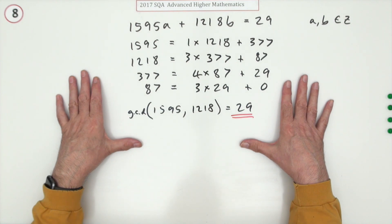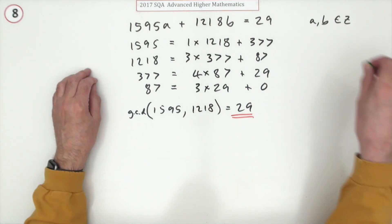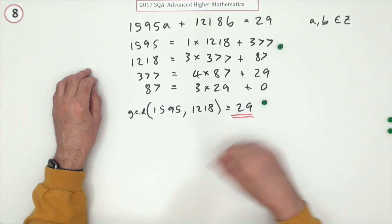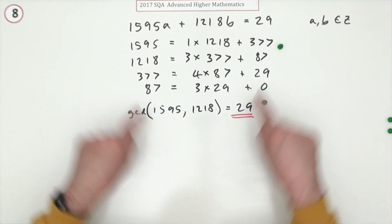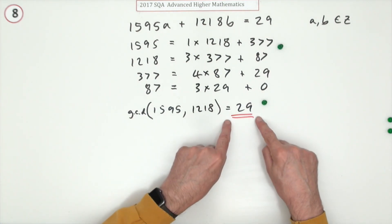Now the way the marks went for all this arithmetic was you got one mark for starting off and one mark for getting the answer, for finishing off.